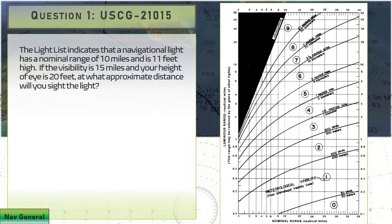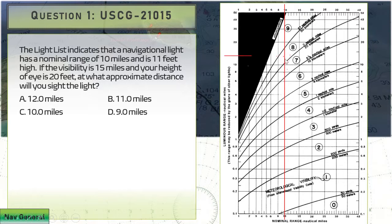The light list indicates that a navigational light has a nominal range of 10 miles and is 11 feet high. If the visibility is 15 miles and your height of eye is 20 feet, at what approximate distance will you sight the light? Our nominal range is 10 miles, draw the line at 10. Our visibility is 15 miles, so that puts us in zone 8, probably right around here.